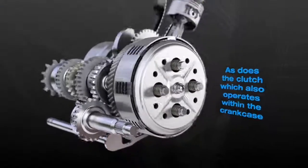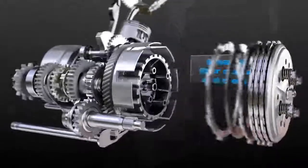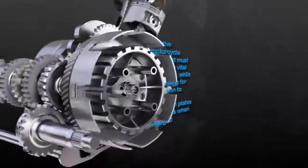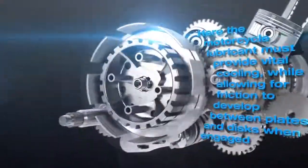The clutch, which is housed underneath the engine's side cover, consists of several fiber discs and steel plates. Here the motorcycle lubricant must provide vital cooling while allowing for friction to develop between plates and discs when engaged.